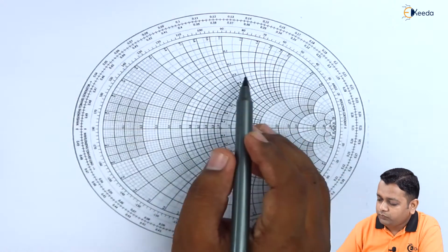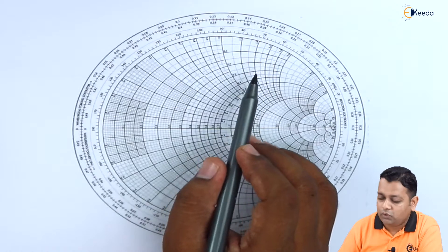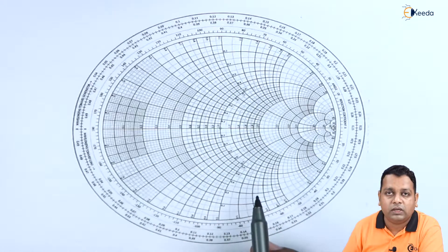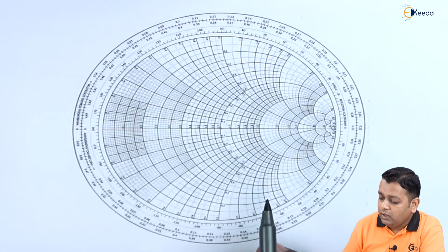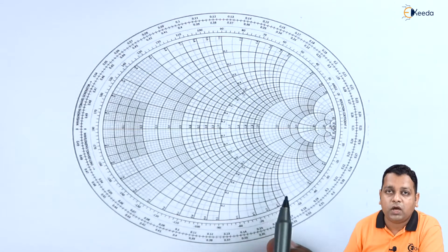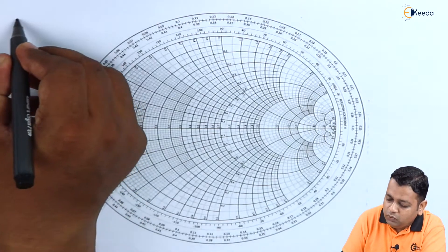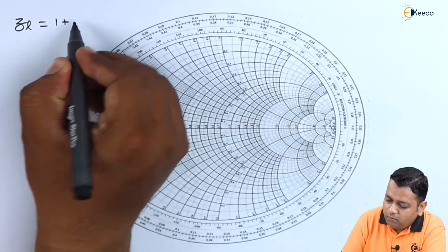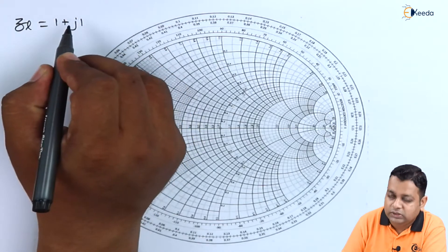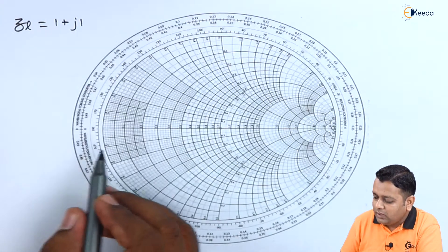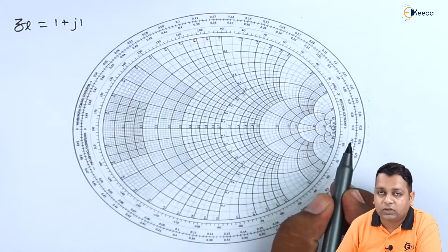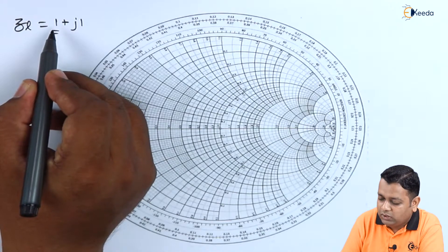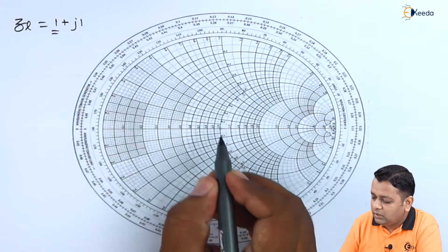The upper half corresponds to the inductive portion — positive imaginary — and the lower half is for the capacitive reactance portion — negative imaginary components. The first step: we have been provided the normalized load impedance, so we mark 1 plus J1 on the Smith chart. On the horizontal line, we mark the real part — it is 1 — and we know that 1 is at the center.